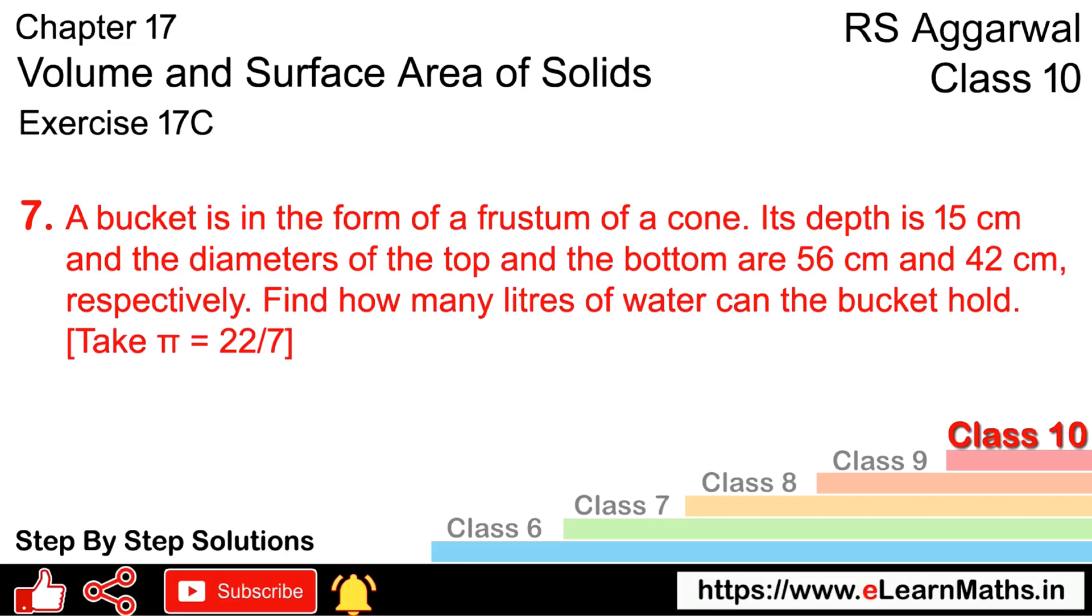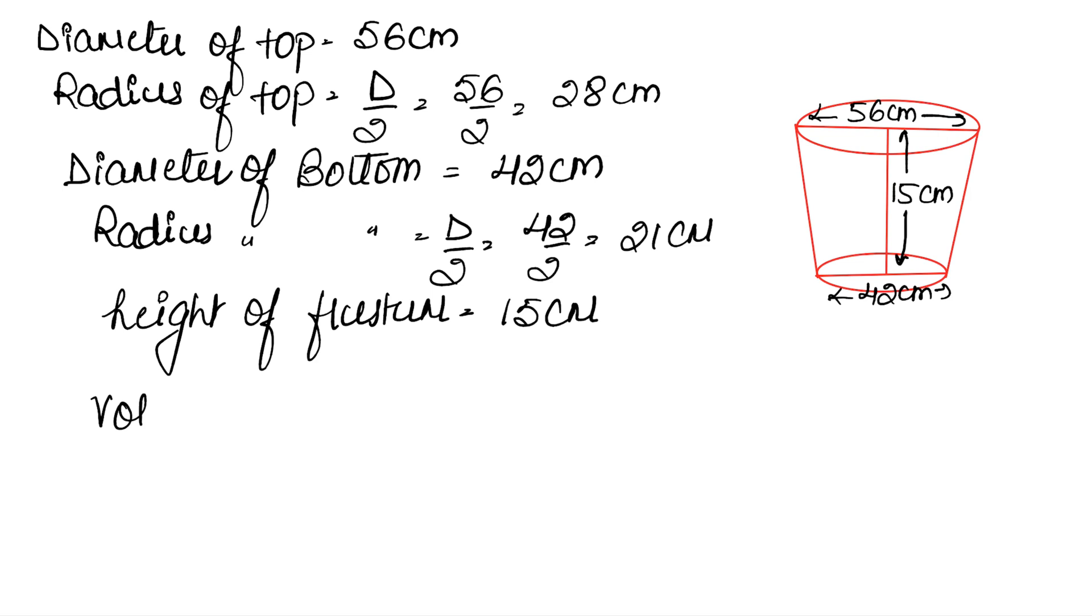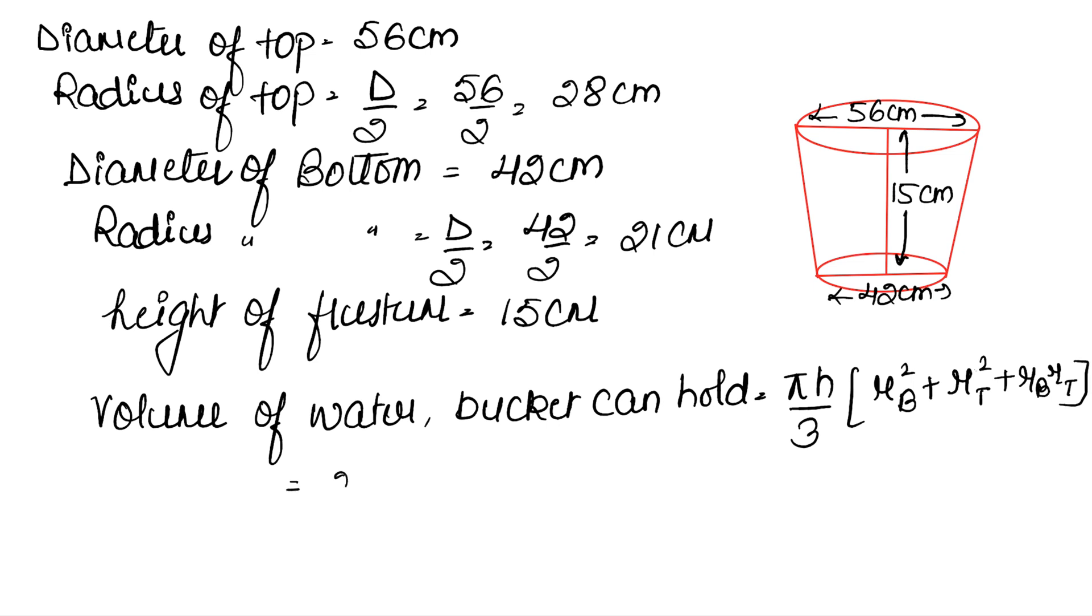We need to find how many liters of water the bucket can hold. So we will calculate the volume of water the bucket can hold. The formula is πh/3 times (radius of bottom squared plus radius of top squared plus radius of base times radius of top). Substituting the values: π is 22/7, h is 15/3.